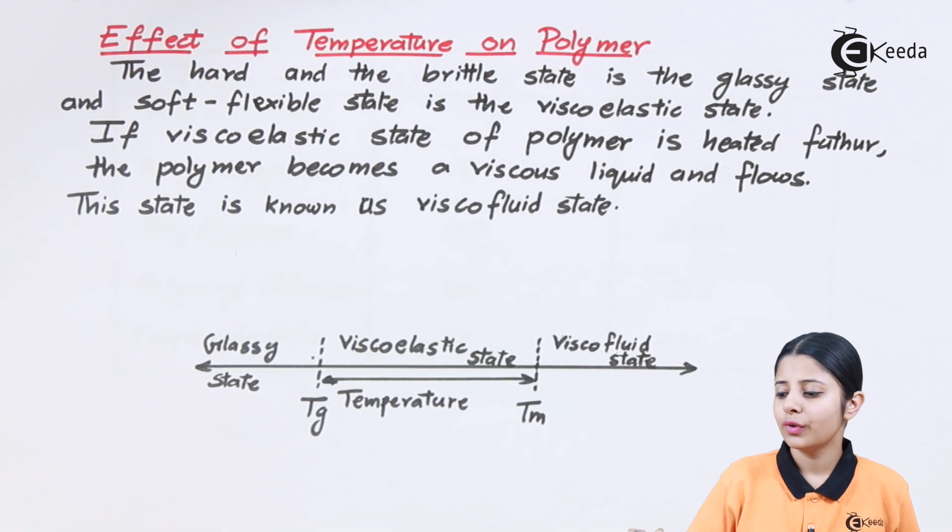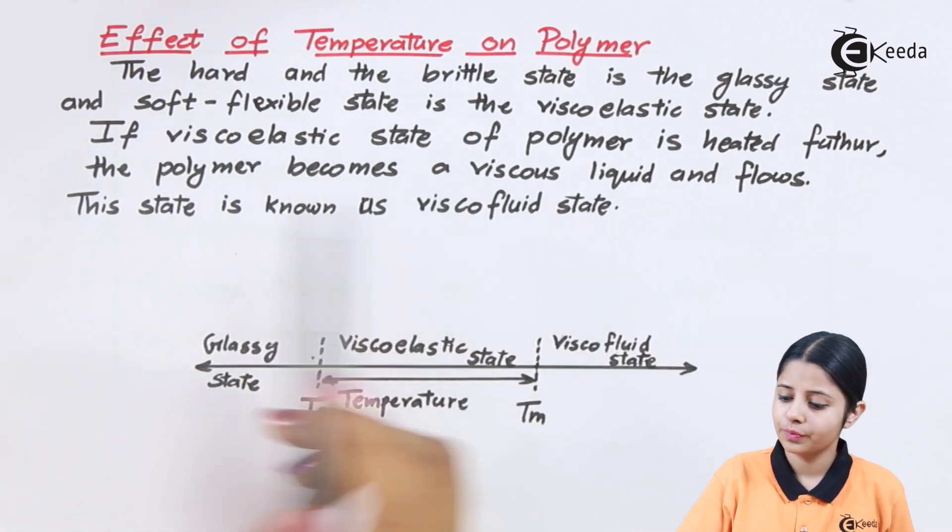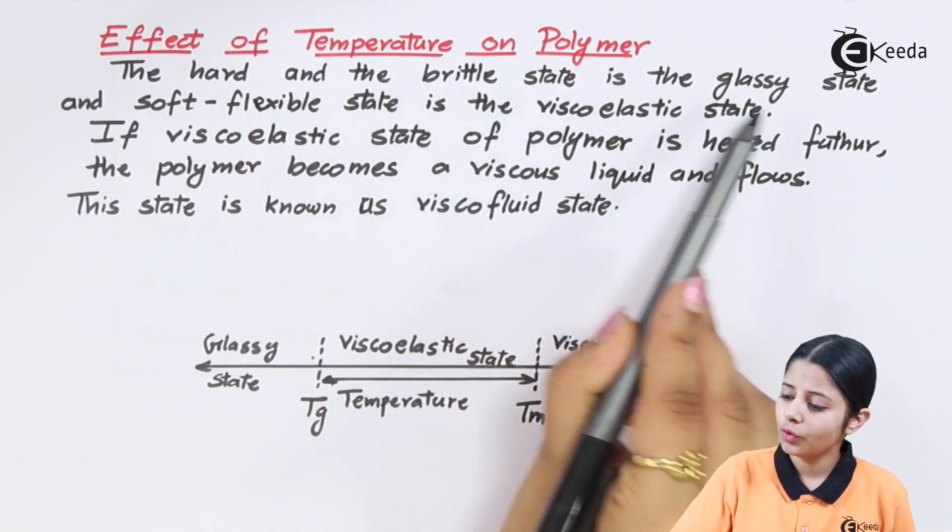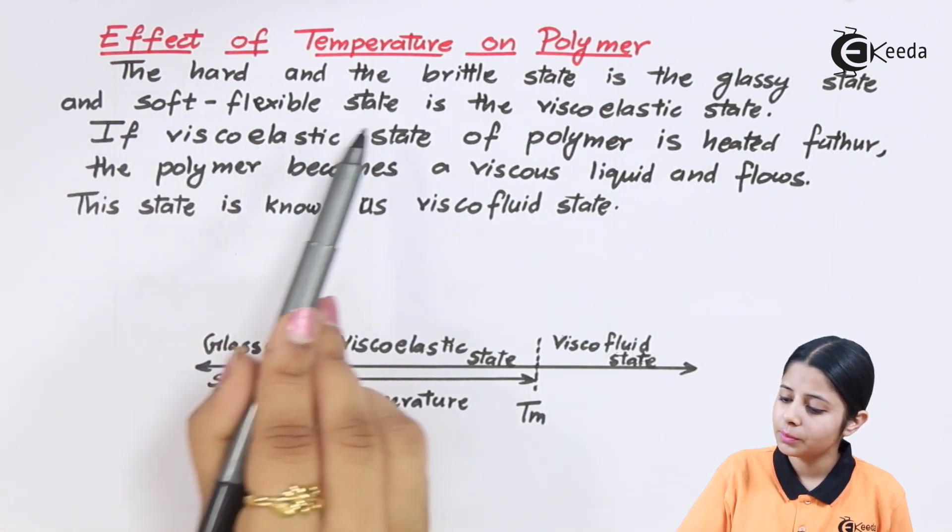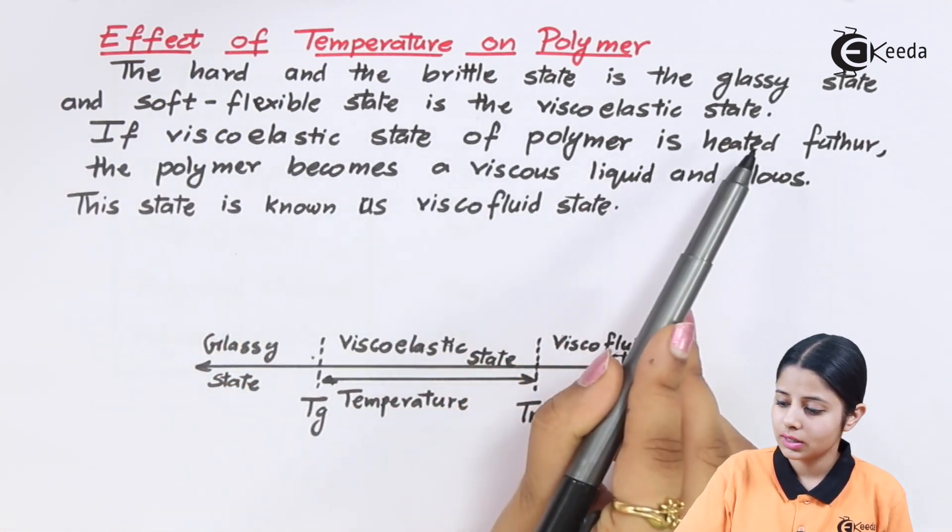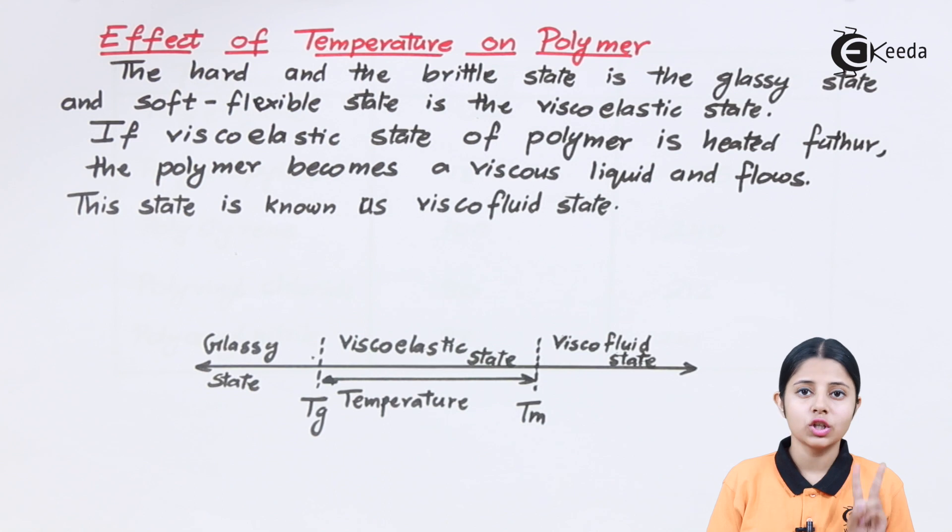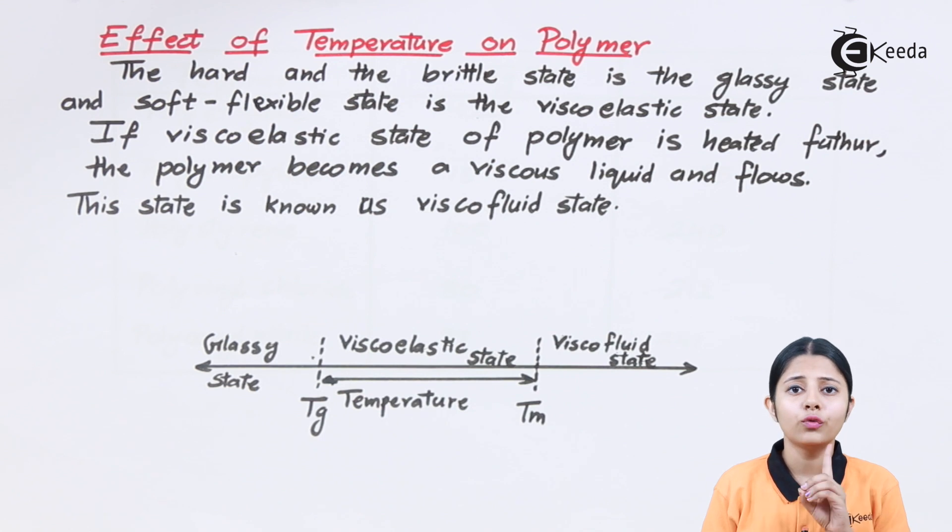Let us see the effect of temperature on polymers. The hard and brittle state is the glassy state, and soft flexible state is the viscoelastic state. Now there are two states defined over here. For any normal substance the two states are solid and liquid, but over here we have first state as the glassy state.